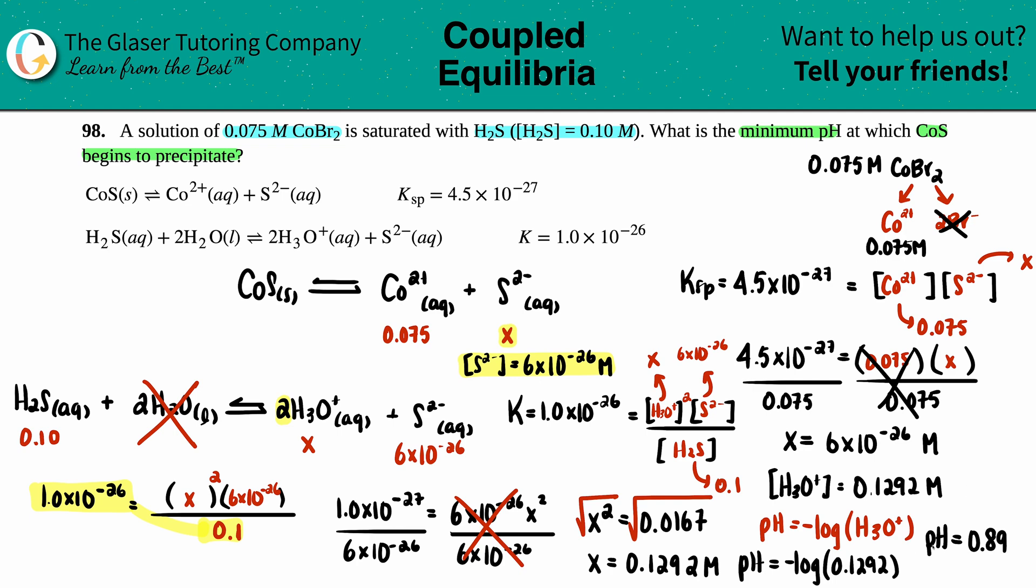Really low pH. That's the minimum pH. It makes sense—minimum, the lowest point, should be a low number. The lowest pH at which CoS precipitates is 0.89. I hope this helped you out. Let me know in the comments. Thank you so much for viewing. I hope you guys are studying hard. Have a great day, and I'll talk to you soon.